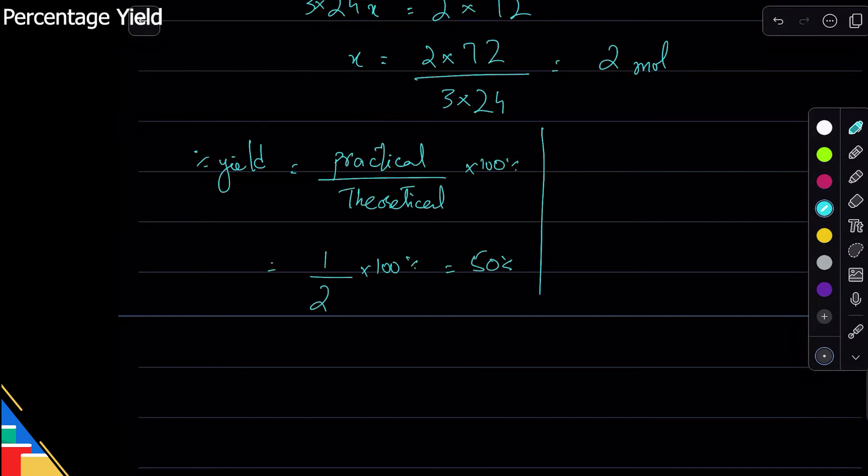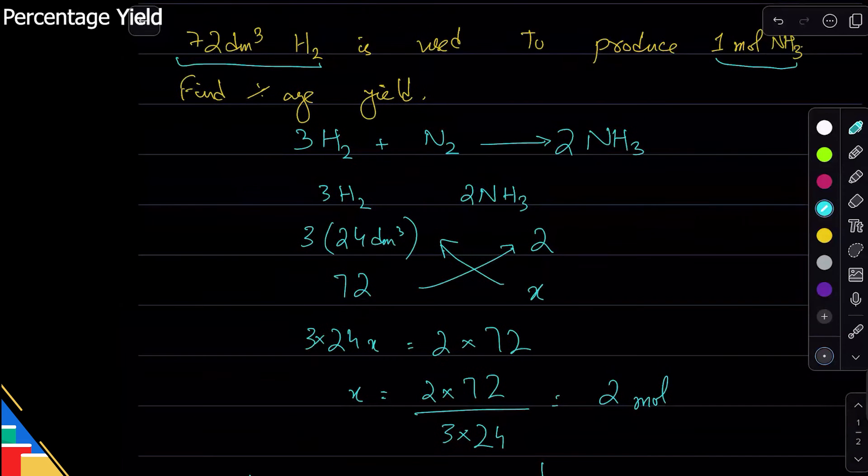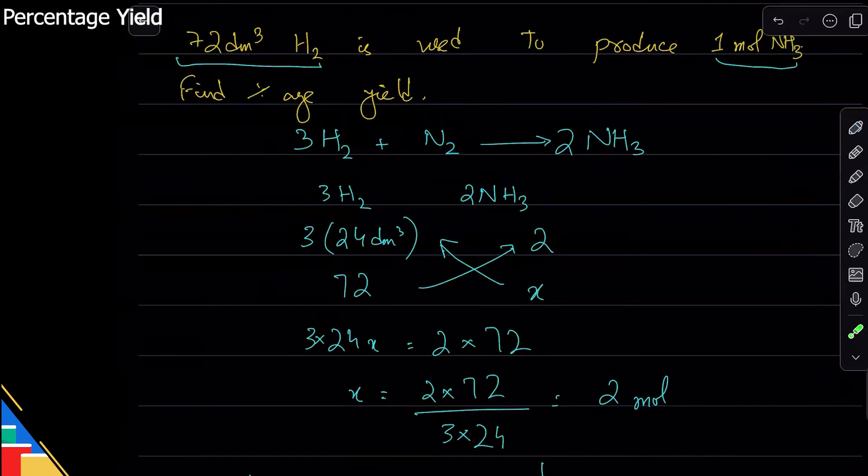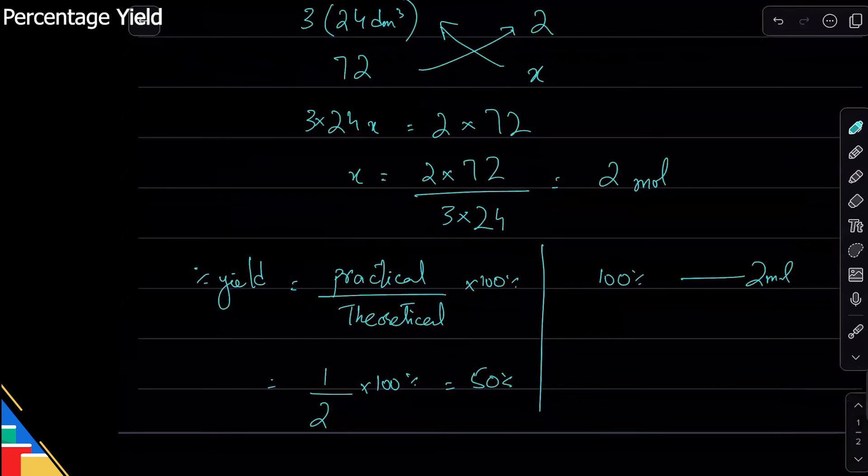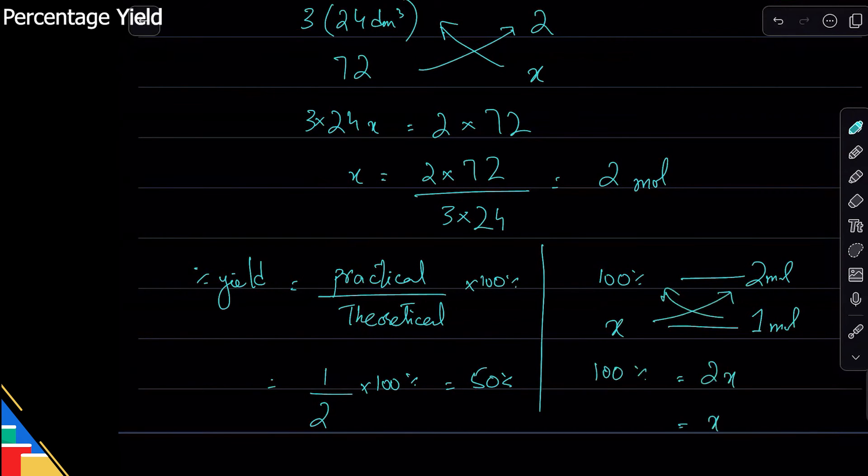Now if I wanted to do the ratio method, I'll be like okay, if the reaction went 100 percent correct, then I will get two moles because that is what I got from calculation. The calculations always give you the 100 percent. But I got only one mole, so what percent is that? This is the ratio method. So you cross multiply: 100 percent equals two, x equals 50 percent.